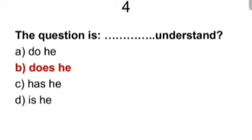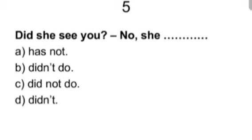Question number five. Did she, you, no, she has not, did not, do, did not do, and didn't. And answer is, she didn't. This is a question tag. The last part is going to be tag. Since the first part starts with did, the last part will surely be did not.